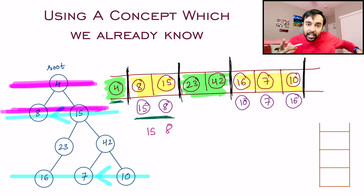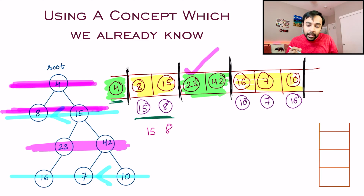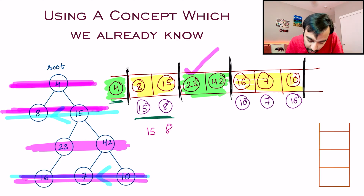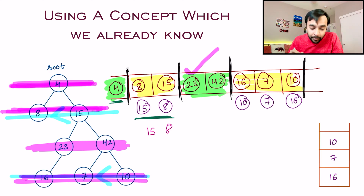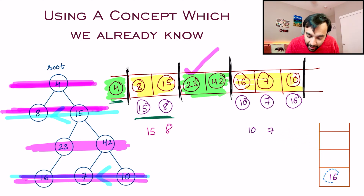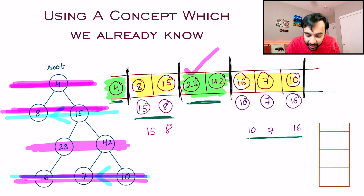Similarly, on the third level you see 23 and 42, which are already correct. Then on the fourth level you see 16, 7, and 10 — instead of adding them to your result list, add all of these elements to a stack first: 16, then 7, then 10. As soon as you reach the end of the level, pop them out: 10 gets popped, then 7, then 16. So you get 10, 7, and 16 in the desired order.